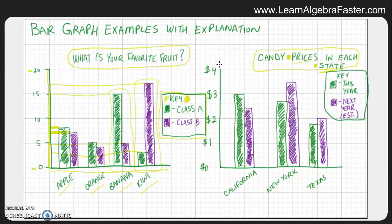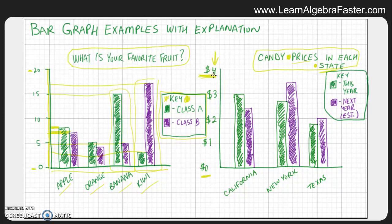Looking at the vertical axis, we see dollar values — prices. The maximum price is four dollars and the minimum is zero. The minimum can be anything as long as it's smaller than the lowest number on the chart, and the maximum of four dollars just needs to be higher than the highest bar on the graph so that all the data shows up and nothing is hidden.